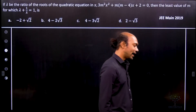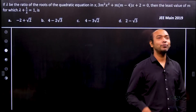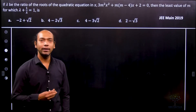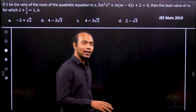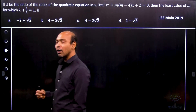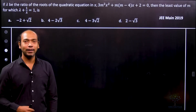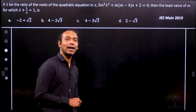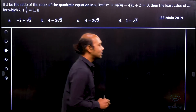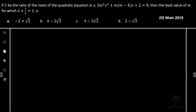In this problem we have to find the roots of the given quadratic equation. Suppose they are alpha and beta, and then we have to find the ratio of lambda. So first we have to calculate alpha and beta. Let alpha and beta be roots of this given quadratic equation.